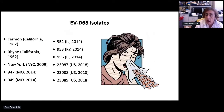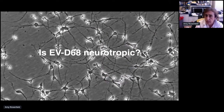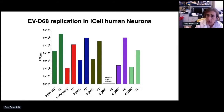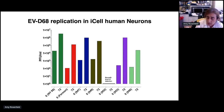To address whether EV68 has always been neurotropic, we collected 11 different isolates from the initial outbreaks through the 2018 outbreak and asked whether EV68 is neurotropic. Here I'm showing you human-induced motor neurons — human induced pluripotent stem cells terminally differentiated into motor neurons. We infected these neurons with EV68 and measured production of infectious virus by plaque assay, with plaque-forming units per ml on the Y-axis and isolates and time points on the X-axis. In our induced motor neuronal cultures, all EV68 isolates but the 952 replicated.